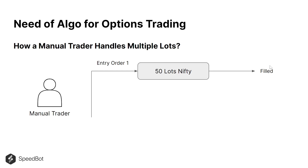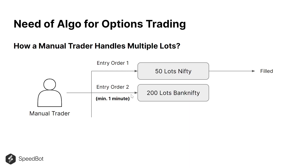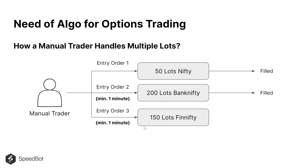Once that order gets filled, they would look to enter another order. There could be a difference of around one minute between the first order and the second order. Let's assume that order is punched in 200 lots of Bank Nifty. Once the trader gets confirmation that the order has been filled, they would look for the third entry order, and again it would cost them around a minute delay. Once that is done, they will be placing the third entry order for 150 lots of Nifty.